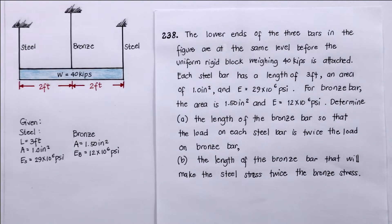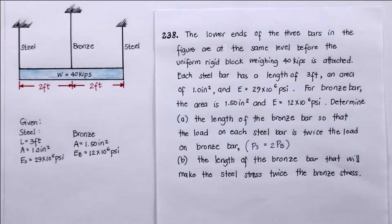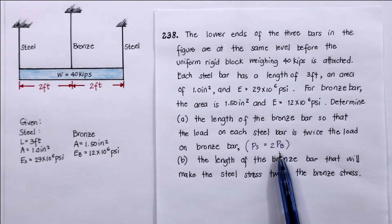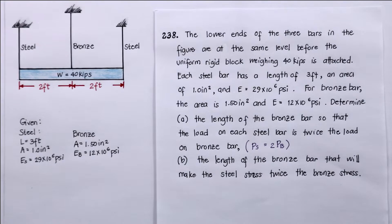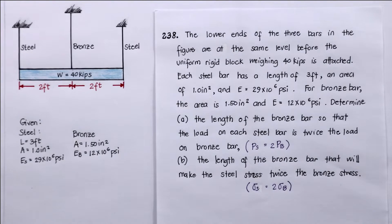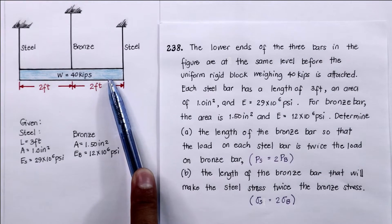We will write into an equation the statement given in the problem — what should the length of bronze be so that the force of steel is twice the force of bronze. Question letter B: determine the length of the bronze that will make the steel stress twice the bronze stress — what should the length of bronze be so that the stress of steel is twice the stress of bronze.